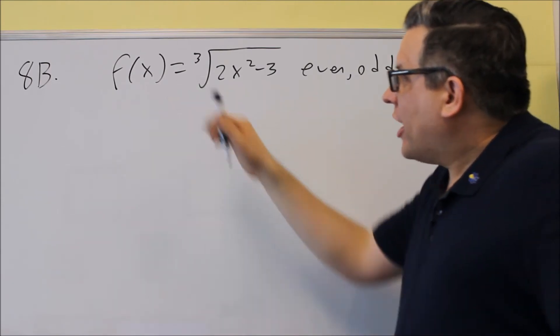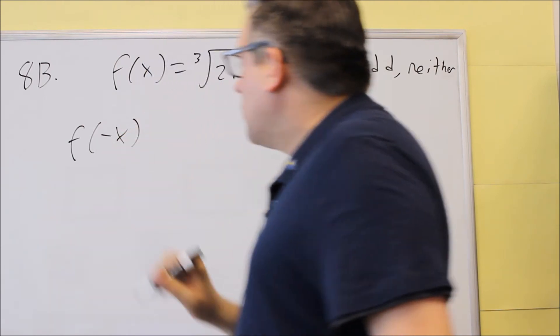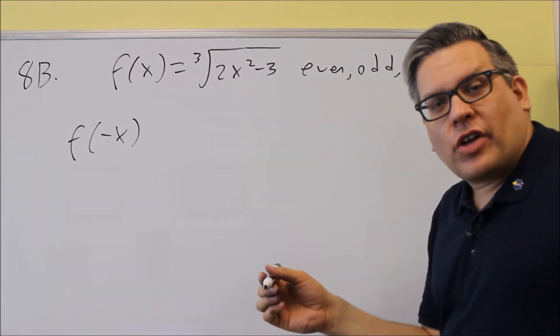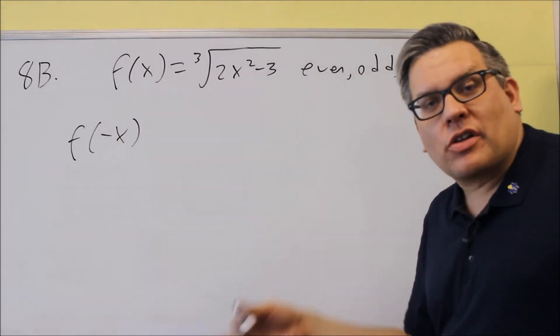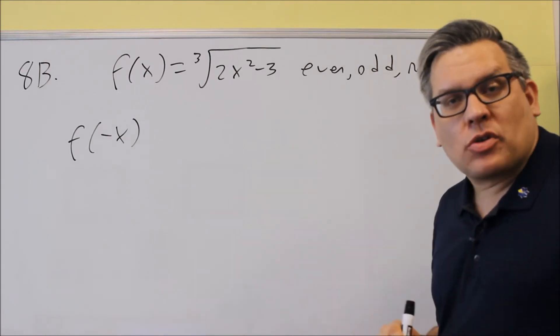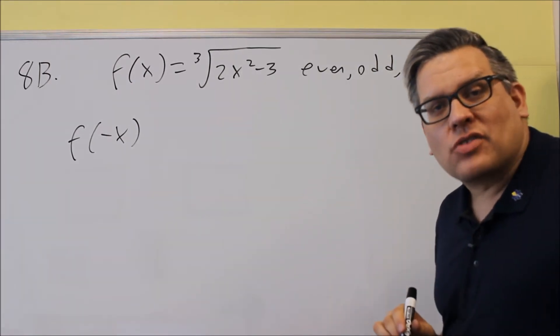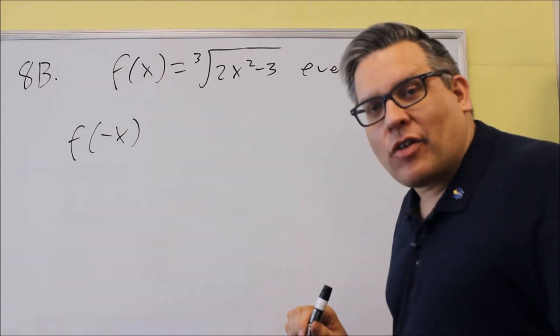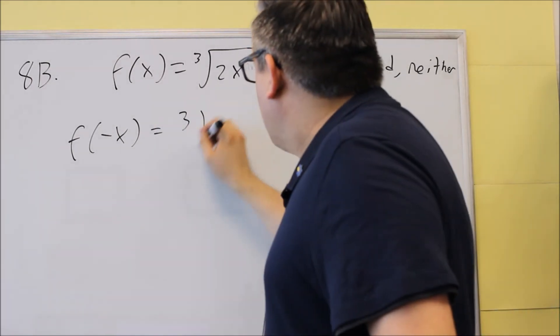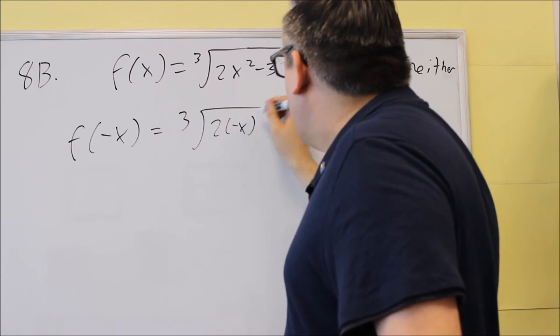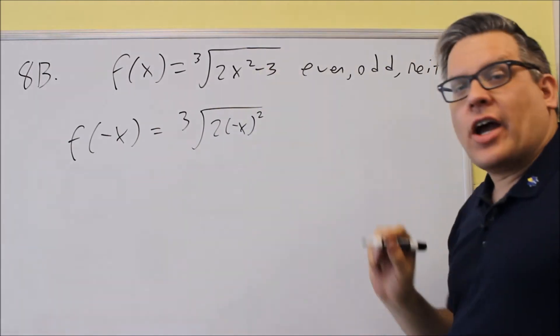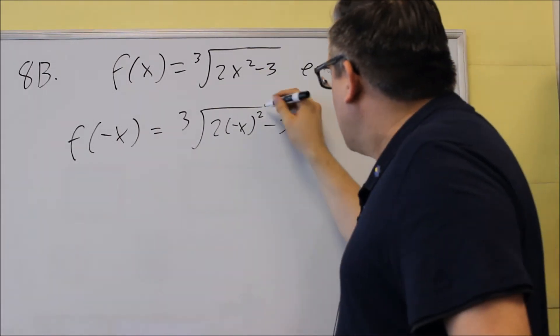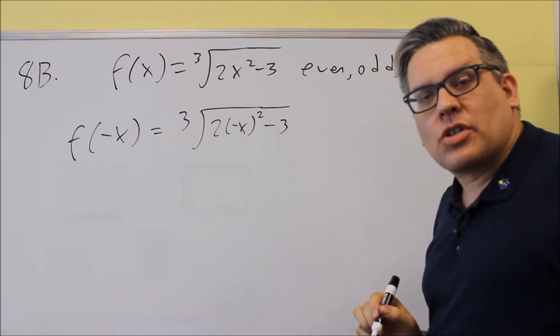So, if we do f of negative x and we get the same thing we started with, it's even. If we get the same thing we started with with a negative out front, it's going to be odd. So, let's do that for this one. Find f of negative x, going to put negative x in for x in the original one, and we just need to simplify this one.